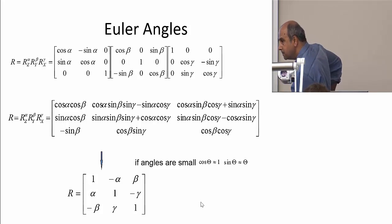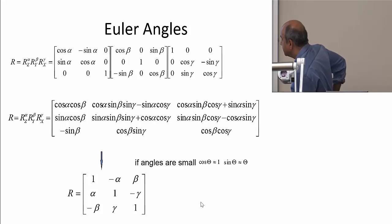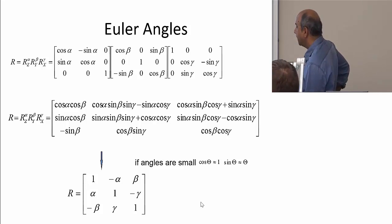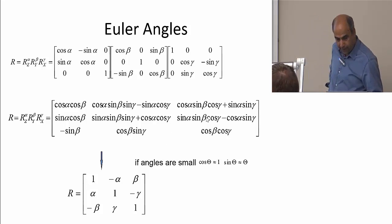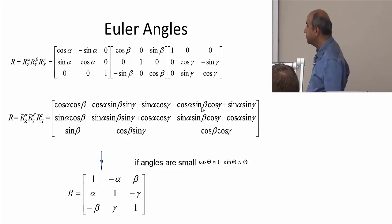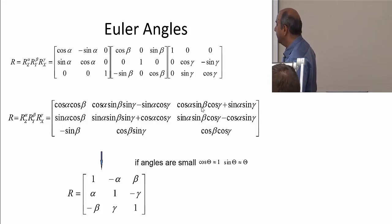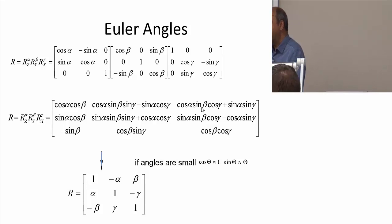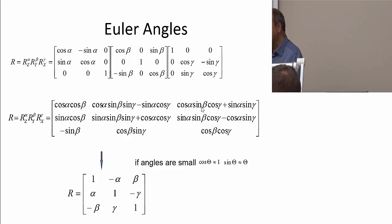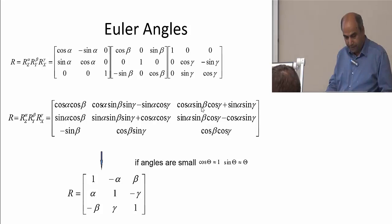A student asks why we can assume the angles are small. The idea is that any rotation around an arbitrary axis can be broken into a series of three rotations around principal axes, each of which is small. So even though you can rotate by any amount, when decomposed into the three Euler angle rotations, each individual component angle remains small. The product alpha*gamma is small because alpha is 0.1 and gamma is 0.1, giving 0.01 — negligible. That's the justification.